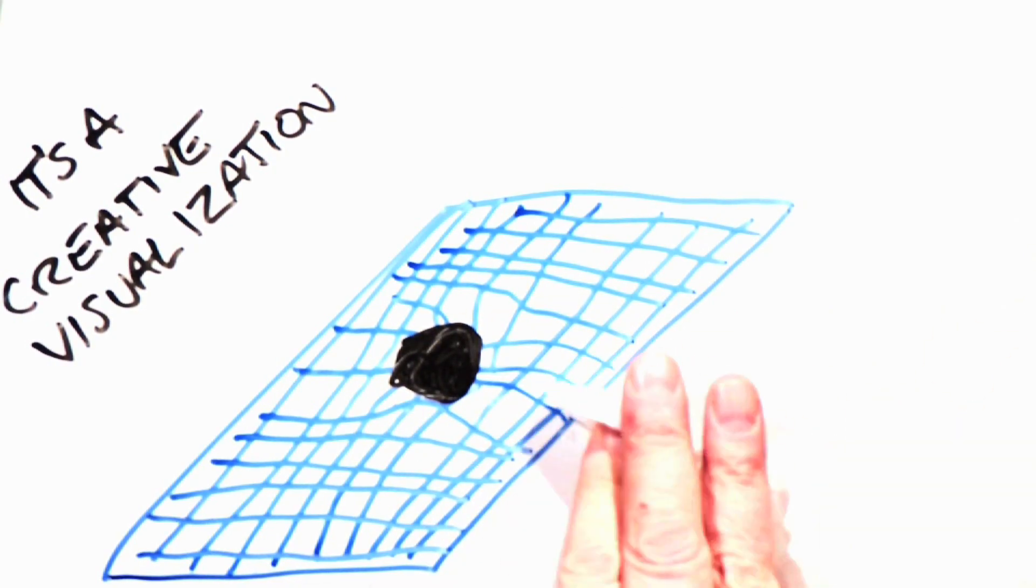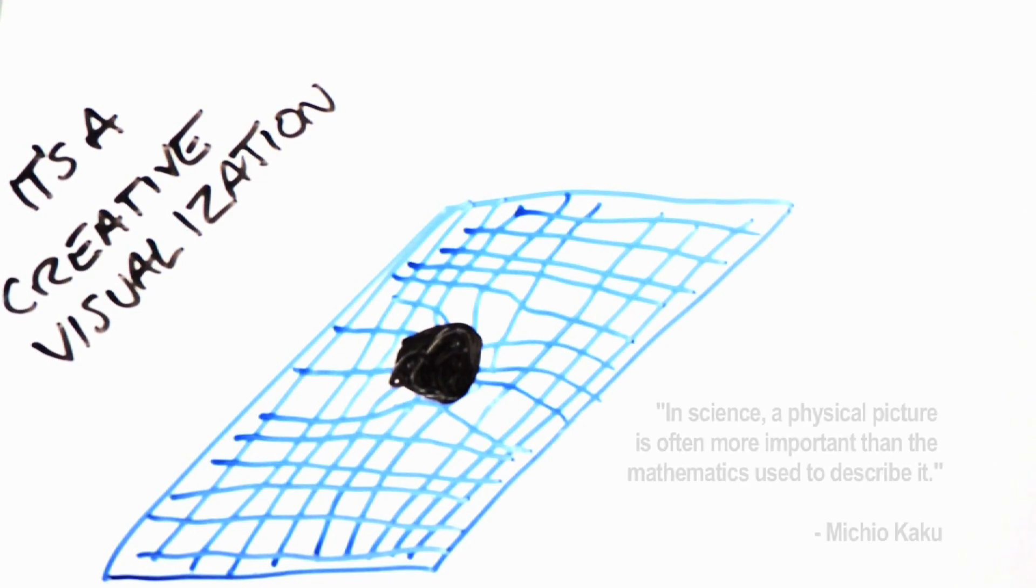If I show you an image of a bowling ball on a rubber sheet and say this is a way of thinking about gravity, would your response be: there are no bowling balls and rubber sheets in space, so that visualization is worthless?